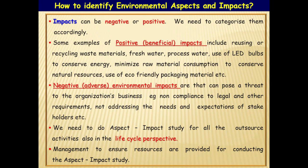We need to identify whether impacts are negative or positive and categorize them accordingly. Some examples of positive, i.e., beneficial impacts include: reuse or recycling of waste materials (e.g., waste paper can be reprocessed), fresh water and processed water recycling, using LED bulbs to conserve energy and natural resources, and use of eco-friendly packaging material to protect the environment. Negative, i.e., adverse environmental impacts that can pose a threat to the organizational business include: non-compliance to legal and other requirements, not addressing the needs and expectations of stakeholders, polluting water, air and land, hazardous waste generation and disposal, etc. We need to do aspect impact study for all outsourced activities also in the life cycle perspective. Management must ensure necessary resources are provided for conducting aspect impact study.